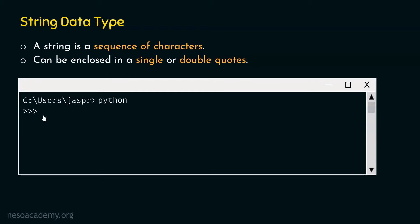Right now I am in my Python interactive shell and I am ready to type in some commands. I will not explain the entire process of how to activate the Python interactive shell, as we have already learned that in the previous lectures. I want to type this command: name equal to Jaspreet. This string is enclosed within double quotes — I am calling this a string because we have a sequence of characters. If I hit enter, I will not get any error message, because this is perfectly fine in Python. We can enclose a string within double quotes.